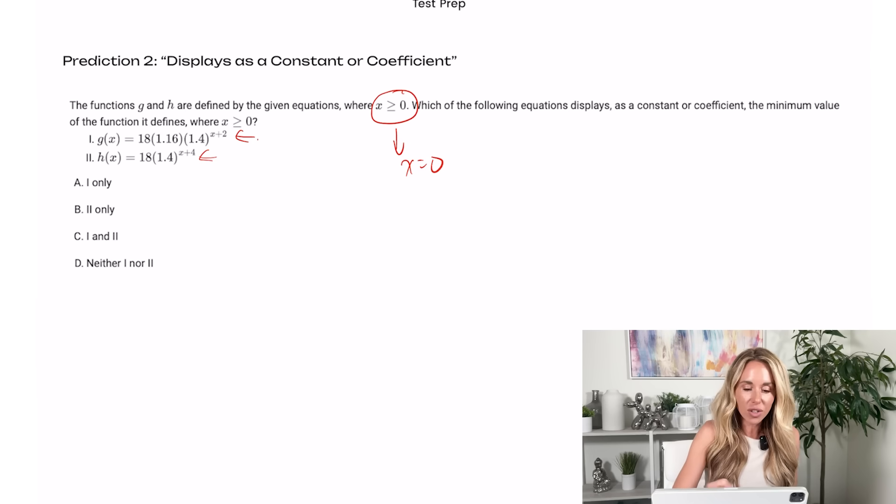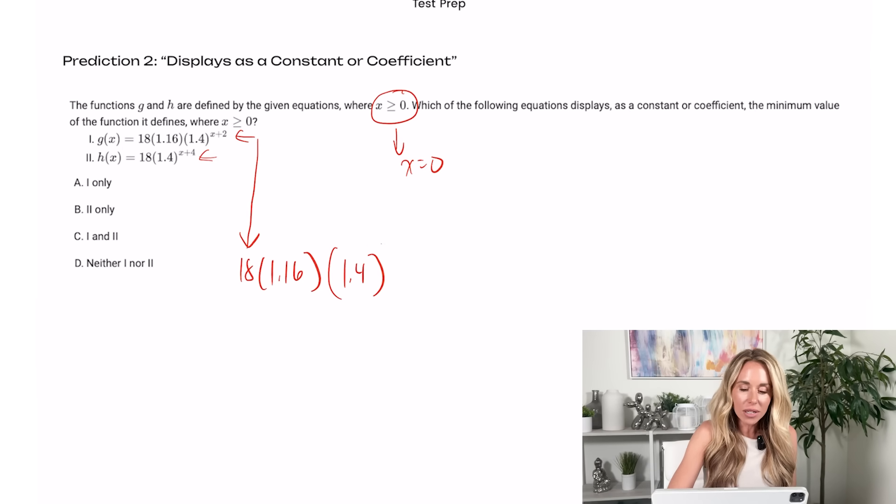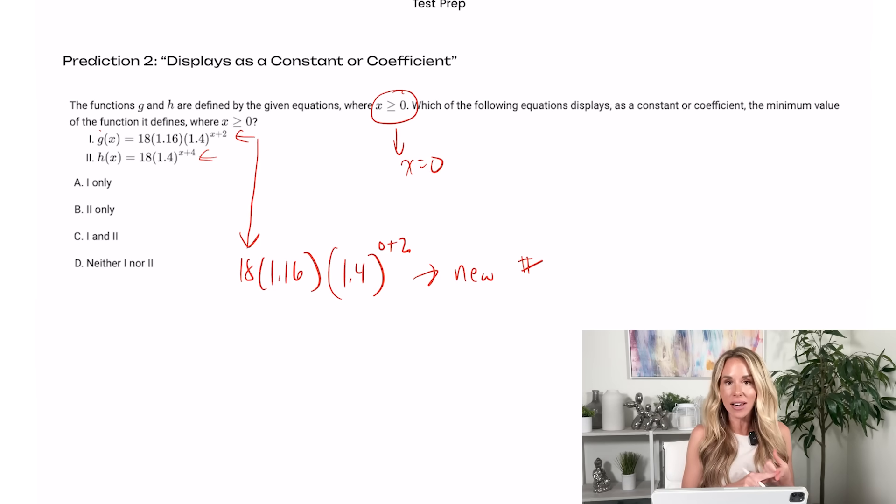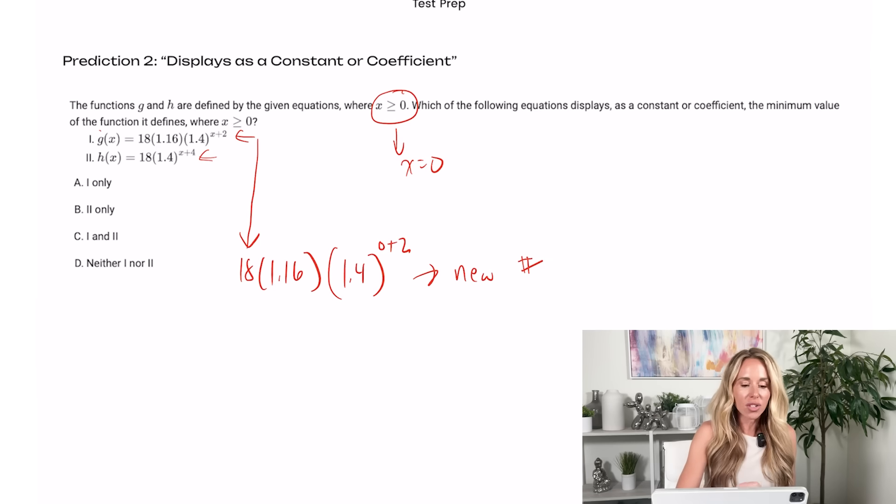So when I do the first one, and let me bring it down here, I've got 18 times 1.16 times 1.4, and then it's going to be to the zero plus two. So essentially, what's going to happen is I'm going to square the 1.4. I'm going to multiply it by 1.16 and multiply it by 18. I'm going to get a new number. That number is not something that's in the original problem. I'm not getting 18. I'm not getting 1.16. I'm not getting 1.4. So one is out. So I'm going to cross off any answer choices that say 1 is an answer.